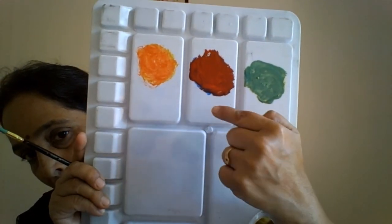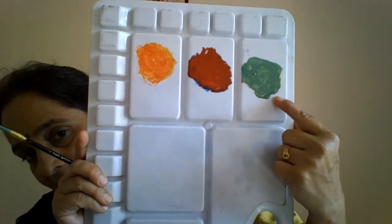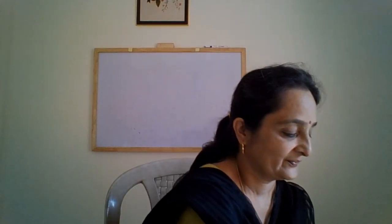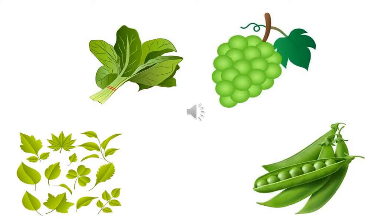Orange, purple, and green — these are the secondary colors. And which are the primary colors? Red, yellow, and blue. So let us see some pictures. Vegetables like spinach and peas are green in color. You also have green grapes and leaves that are green in color.